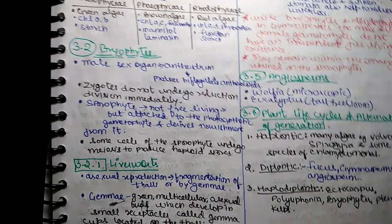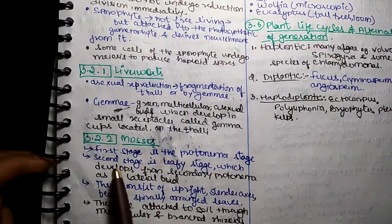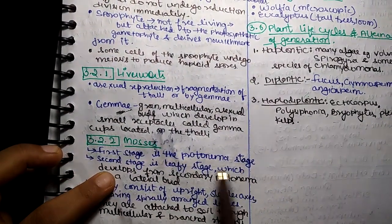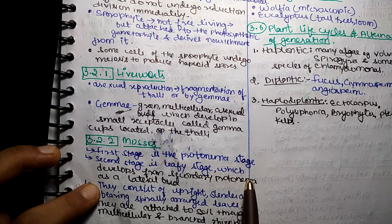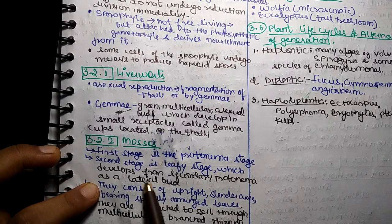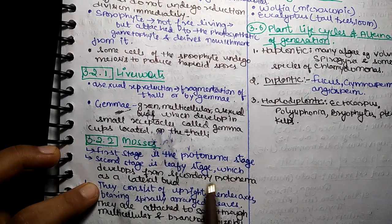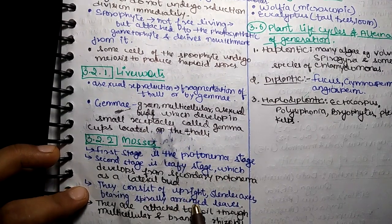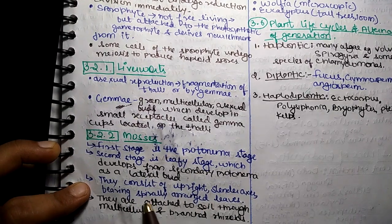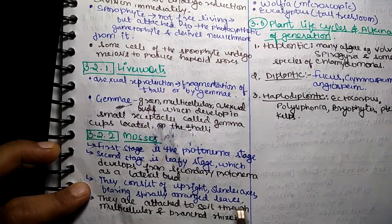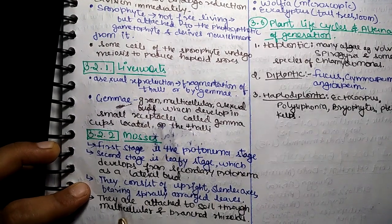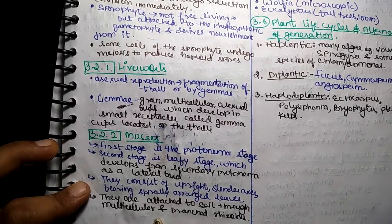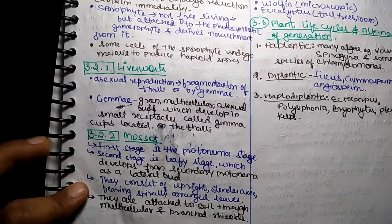Gemmae are green multicellular asexual buds which develop in small receptacles called gemmae cups located on the thalli. Mosses: first stage is the protonema stage. Second stage is the leafy stage, which develops from secondary protonema as a lateral bud. They consist of an upright slender axis bearing spirally arranged leaves. They are attached to the soil through multicellular and branched rhizoids.